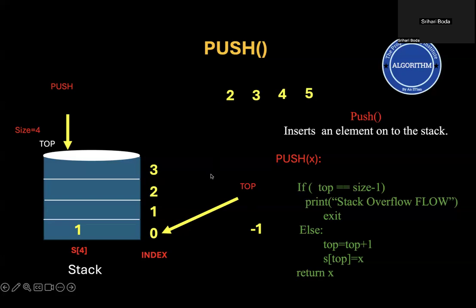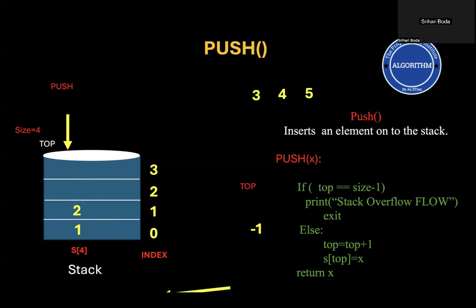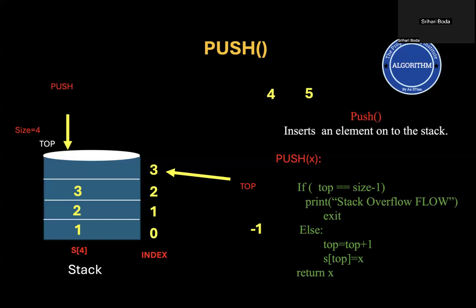If you want to insert one more element, we increment top from 0 to 1, and insert the new element into slot number 1. Again, if you want to insert one more element, we increment top by 1 from 1 to 2, so top points to 2, and into that new position we insert the element. Once more, we increment top from 2 to 3, and into slot index 3 we insert the fourth element. Now all slots in the stack are occupied.